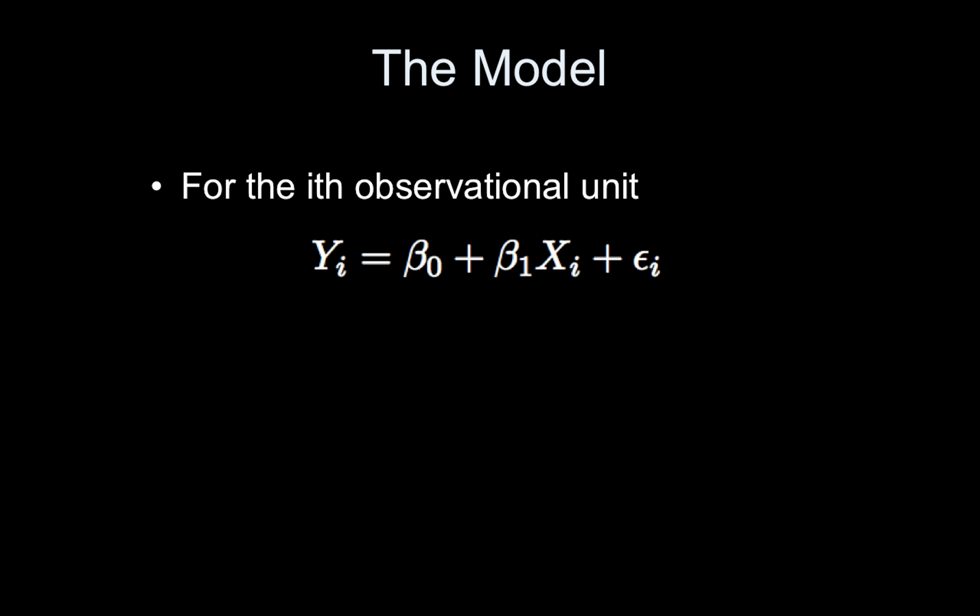So here's the model. I'm going to be expressing it this way today where the i subscript is for the i-th observational unit. In this example with reaction time and age that would be for a single subject. So a single subject's reaction time we're assuming is equal to some parameter beta naught, now beta naught is the same for everybody, plus some parameter beta 1 times their age plus some error term. So the only things that vary by subject here are y, x, and epsilon whereas beta naught and beta 1 stay the same. There is a parameter actually contained within the epsilon and we'll talk about that in a minute.